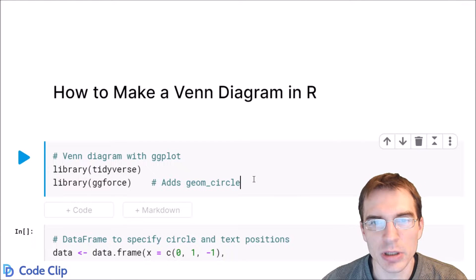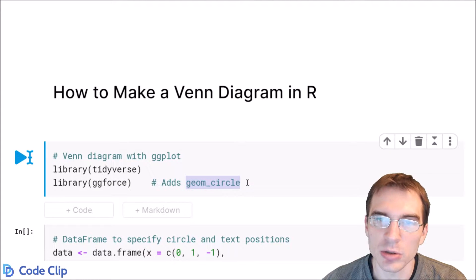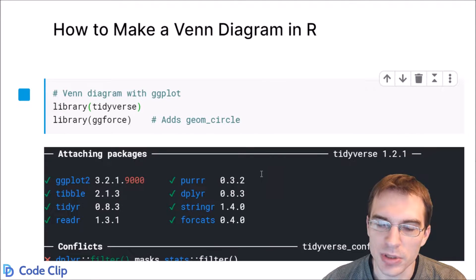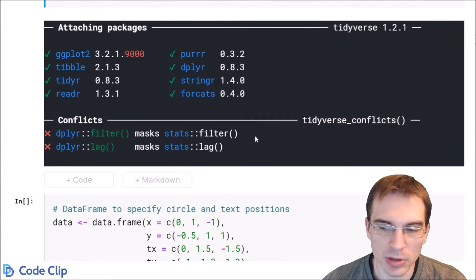We actually need to load in an extra library called ggforce, which adds a new function called geom_circle, which allows you to draw circles on the plot. Basically, to make a Venn diagram in ggplot, you have to manually draw circles and fill them in. We'll start by loading those packages.